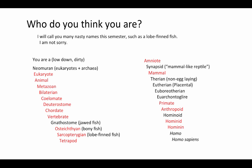Here is the cladistic list of who you should think you are: you are a neomyrin (including eukaryotes and archaea), eukaryote, animal, metazoan, bilaterian, coelamate, deuterostome, chordate, vertebrate, gnathostome, osteichthian, sarcopterygian, tetrapod, amniote, synapsid, mammal, therian, eutherian, euboriotheran, you are Conteglir, primate, anthropoid, hominoid, hominid, hominin, Homo, Homo sapiens. So that's who you think you are.